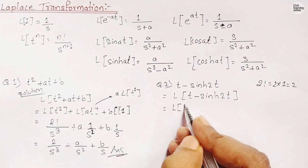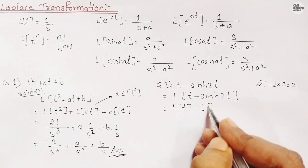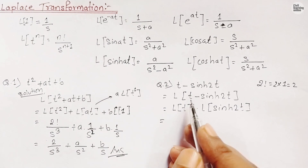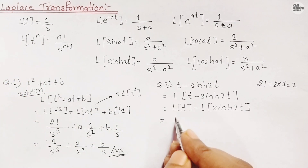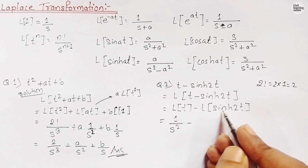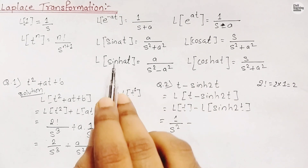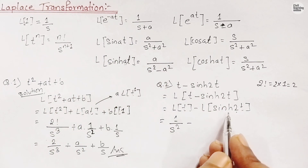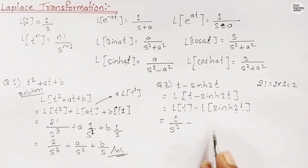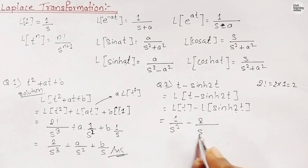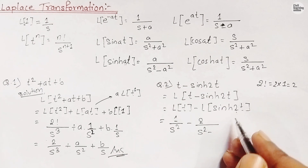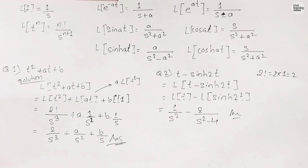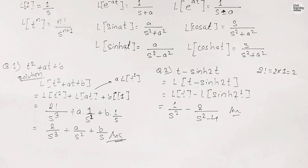We separate it: L{t} - L{sinh(2t)}. Applying the formula: L{t} = t^1, so using n=1: 1!/s² = 1/s². For L{sinh(2t)}, using the formula a/(s²-a²) with a=2: we get 2/(s²-4). So the final answer is 1/s² - 2/(s²-4).